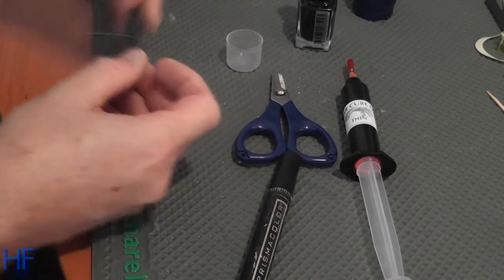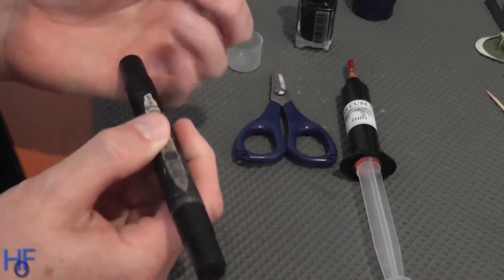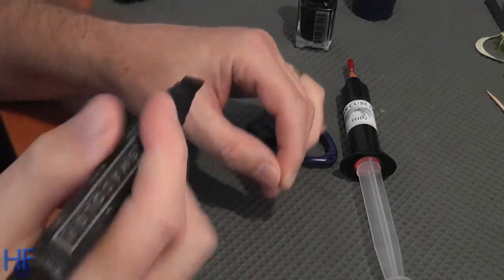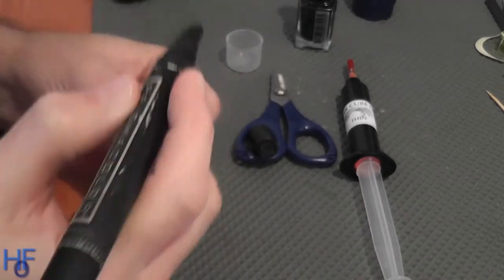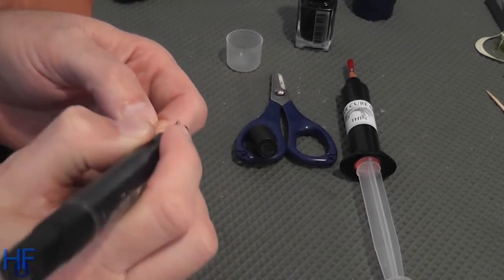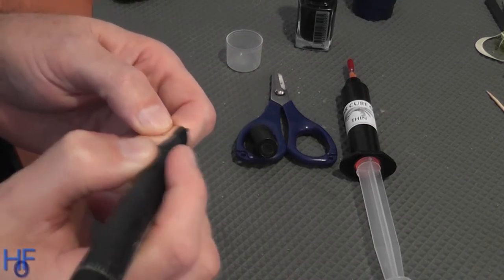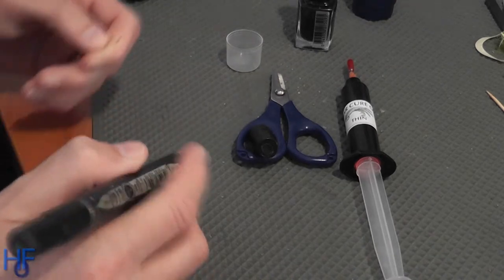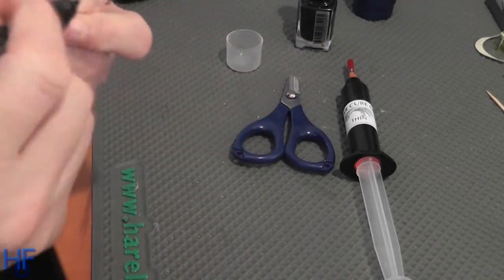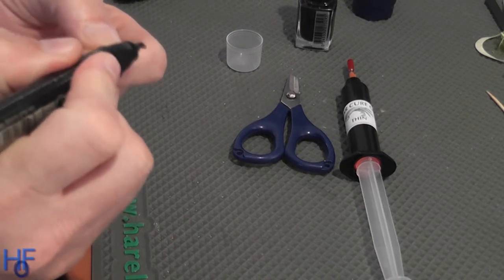So the next step, the first one I'm going to do is the one with the permanent marker. So it's going to be a black pupil inside a clear eye. This is just a prismacolor, a double ended marker. And then I'm just going to color the burnt mono piece to make it black. And then I'll dip that in the epoxy in a second.